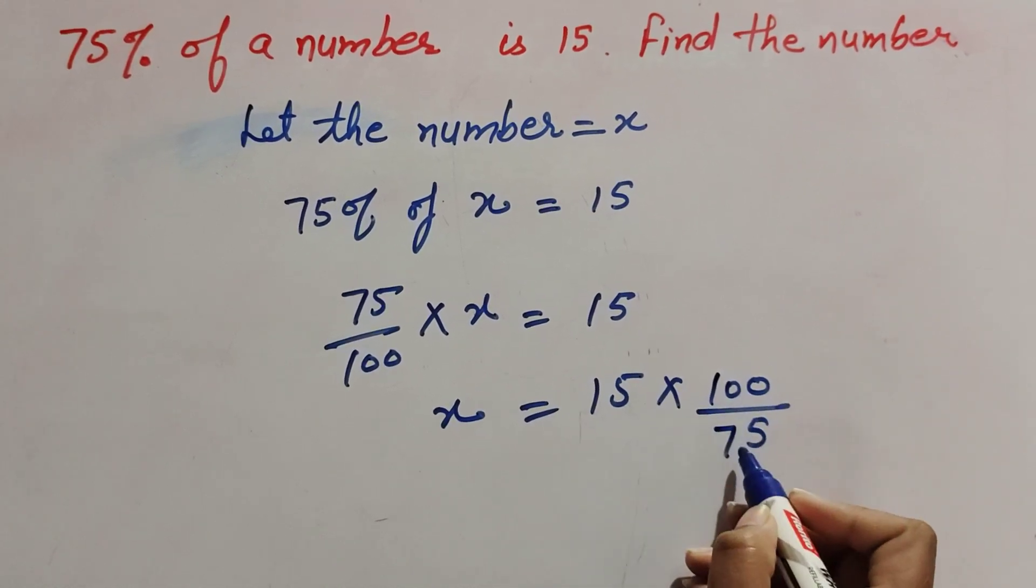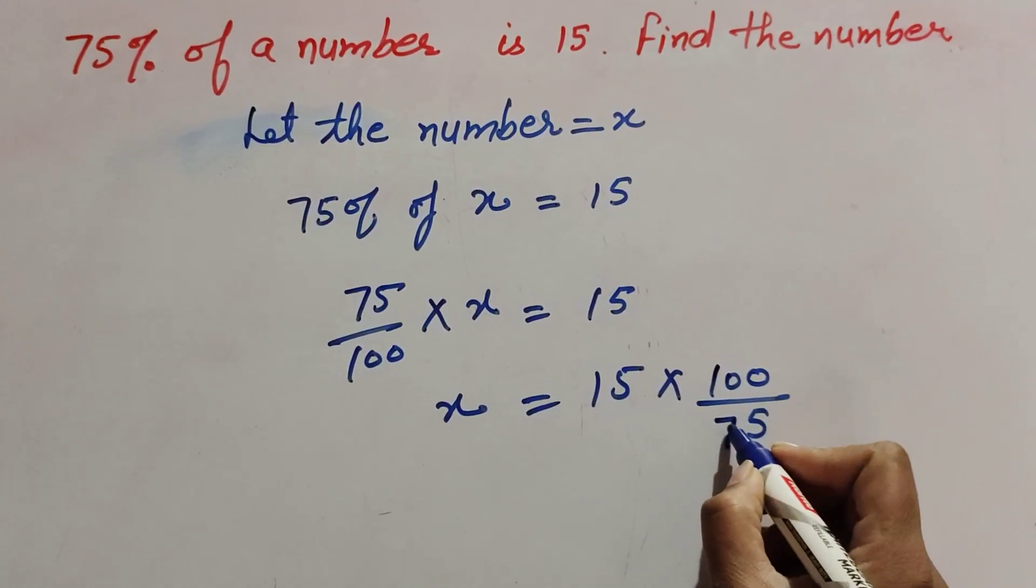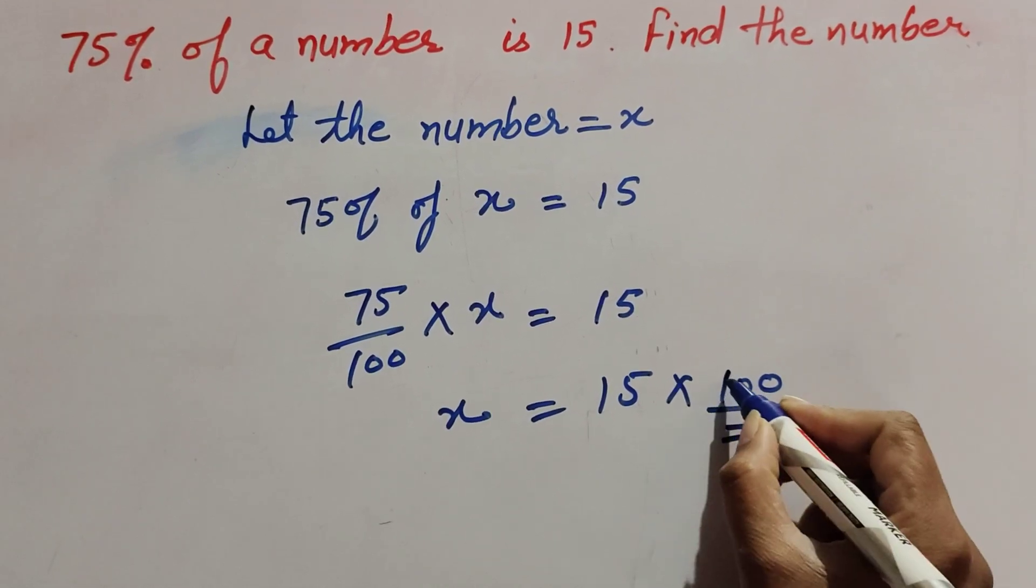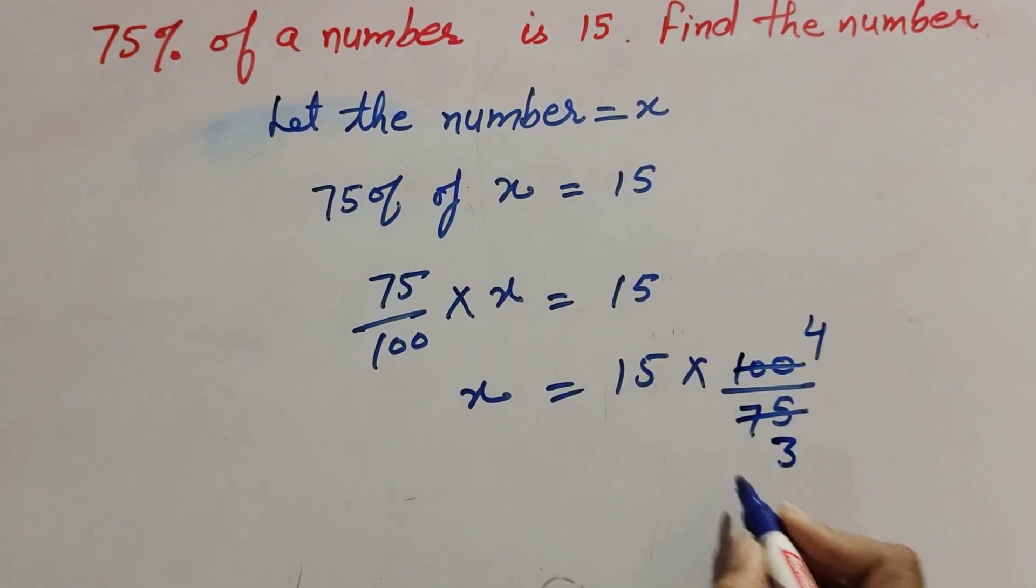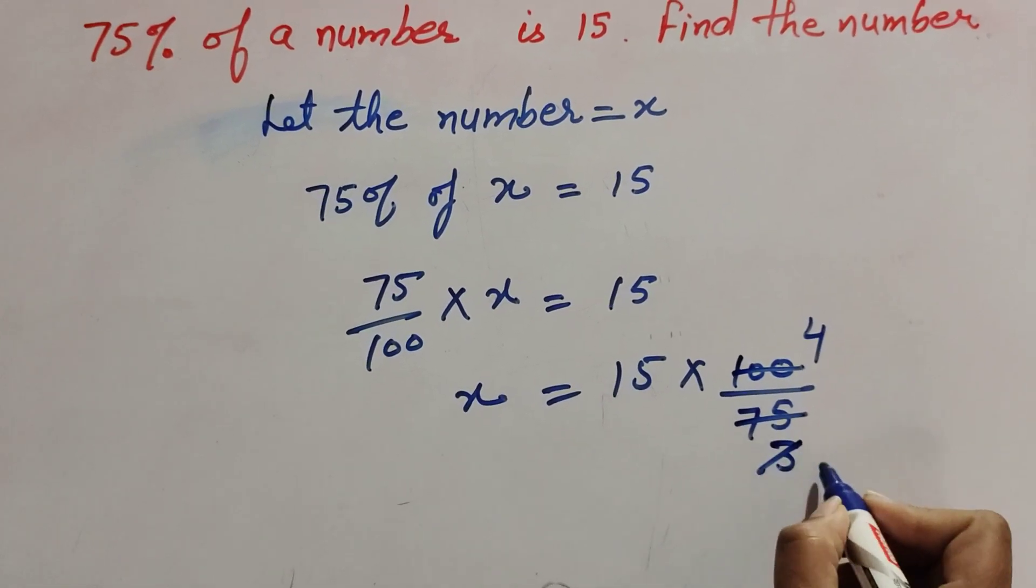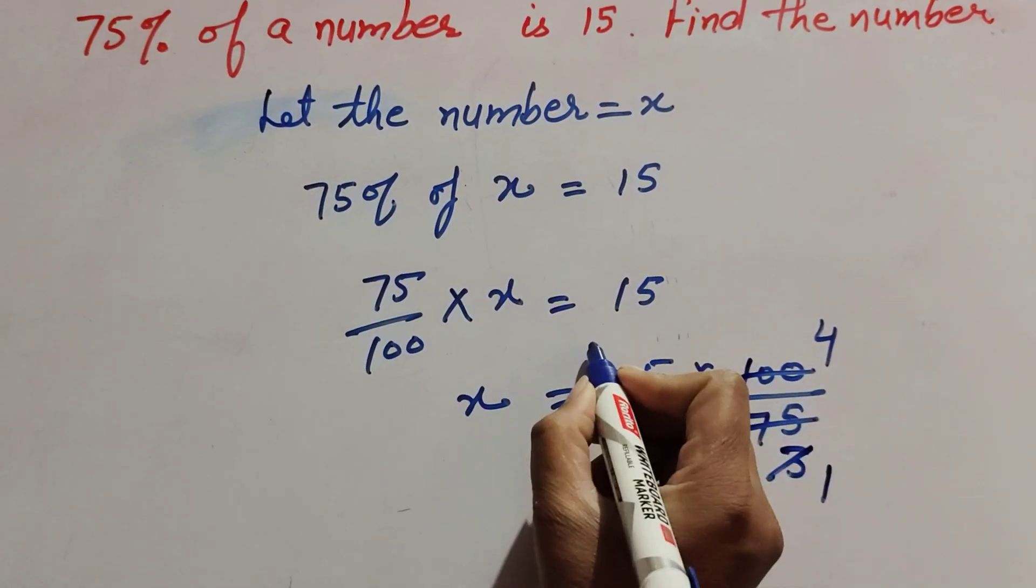In this, 75 and 100 both are divisible by 25: 25 times 3 is 75 and 25 times 4 is 100. And 15 and 3 are divisible by 3, so we can cancel them. 3 times 1 is 3, 3 times 5 is 15.